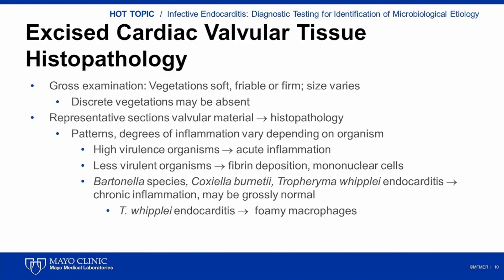Surgery is performed in some but not all cases of endocarditis. If a microbial diagnosis has not been established at the time of surgery, excised valvular tissue provides a valuable diagnostic specimen. It should be submitted for histopathologic and microbiologic evaluation. If a microbial diagnosis has already been established, additional microbiology testing is typically unnecessary, but histopathologic evaluation is often still performed. On gross examination, vegetations may be soft, friable, or firm, and vary in size based on the infecting organism. Discrete vegetations are not, however, always present.